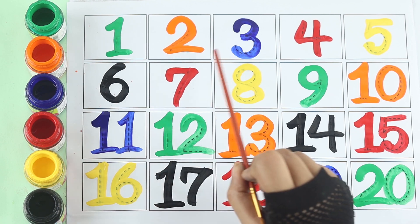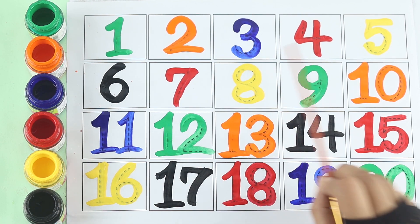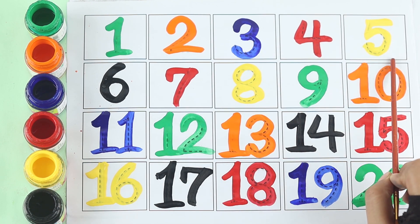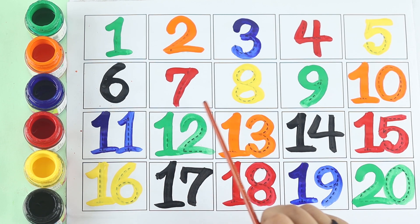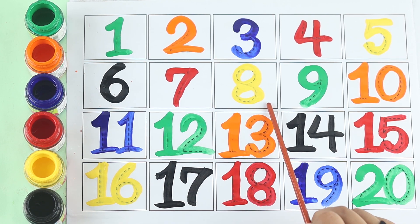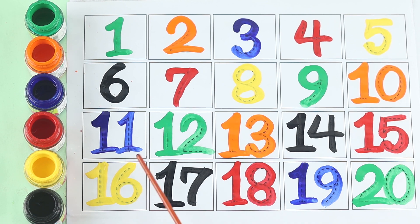One, two, three, four, five, six, seven, eight, nine, ten, eleven, twelve, thirteen, fourteen, fifteen, sixteen, seventeen, eighteen, nineteen, twenty.